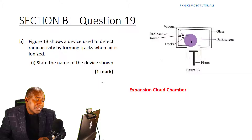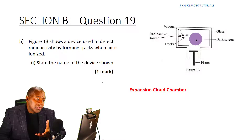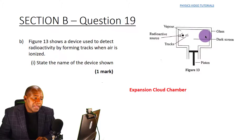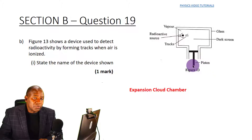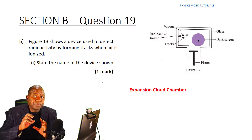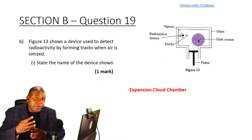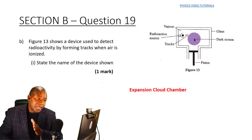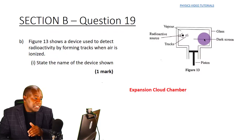This is how the expansion cloud chamber works: the radioactive sample emits radiation that ionizes the air or alcohol moisture molecules inside the chamber. The piston moves downwards, causing the air to expand and cool down. The moisture then condenses around the ionized air particles, rendering their tracks visible.